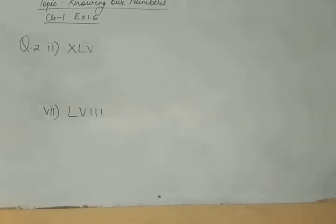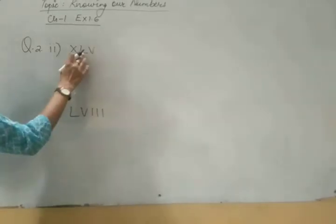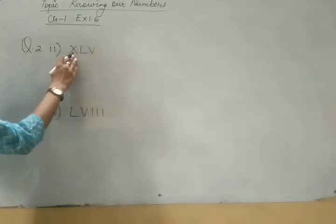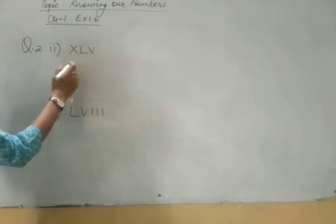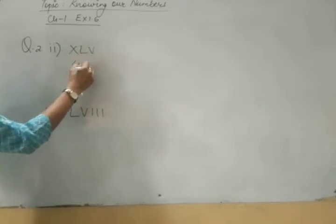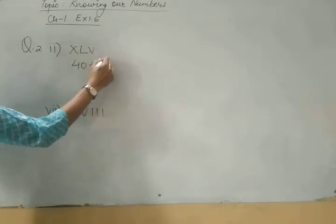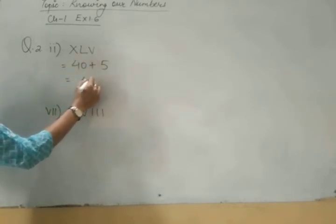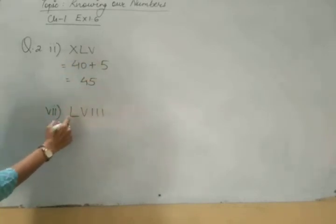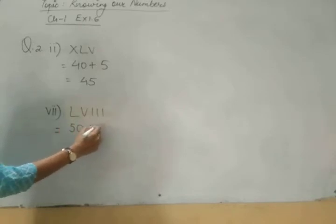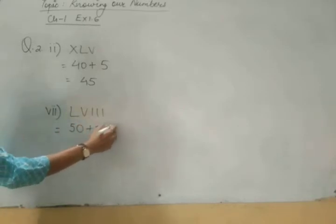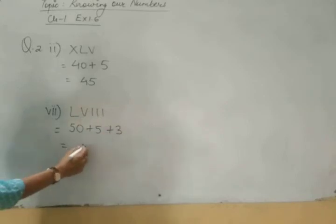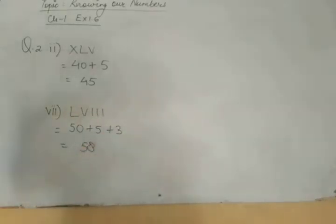Now in second question, you have to write it in Hindu Arabic. XXXLV. L means 50. V means 5. And 1, 2, 3. 8. 58. Clear?